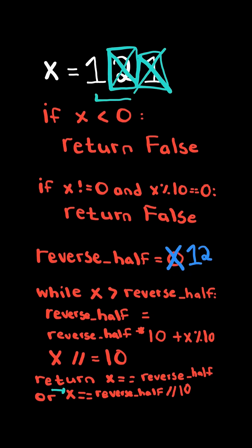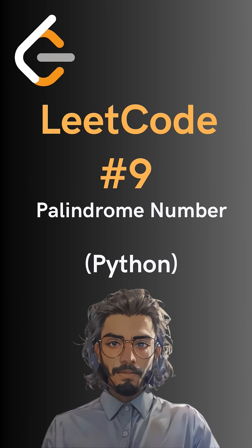Or in the case where x has an odd number of digits, we want to remove the last digit of reversed half and compare. And here's the code to do so.